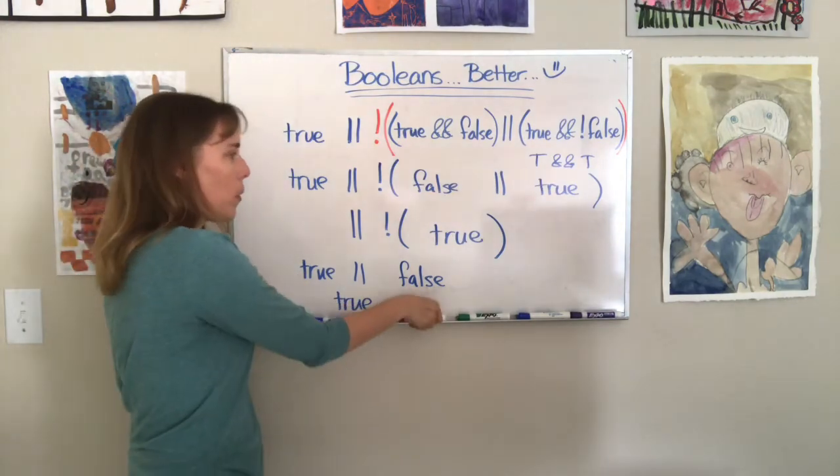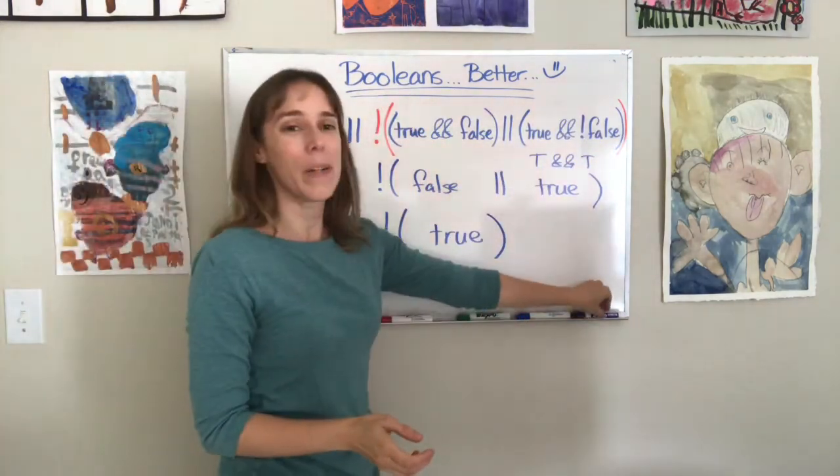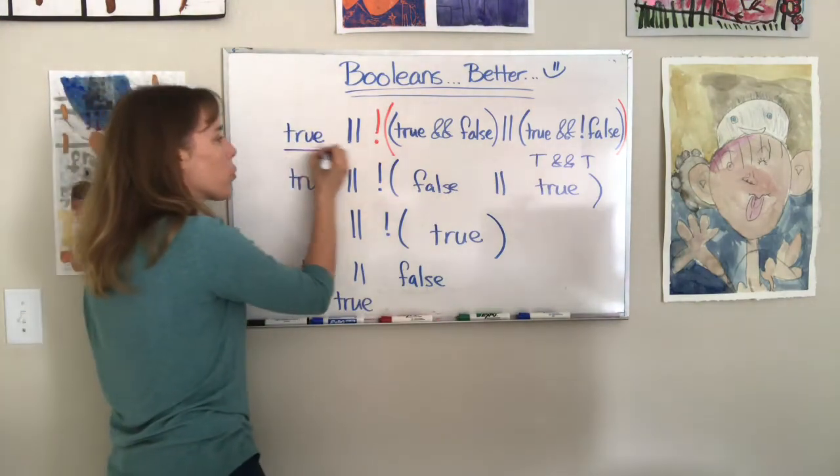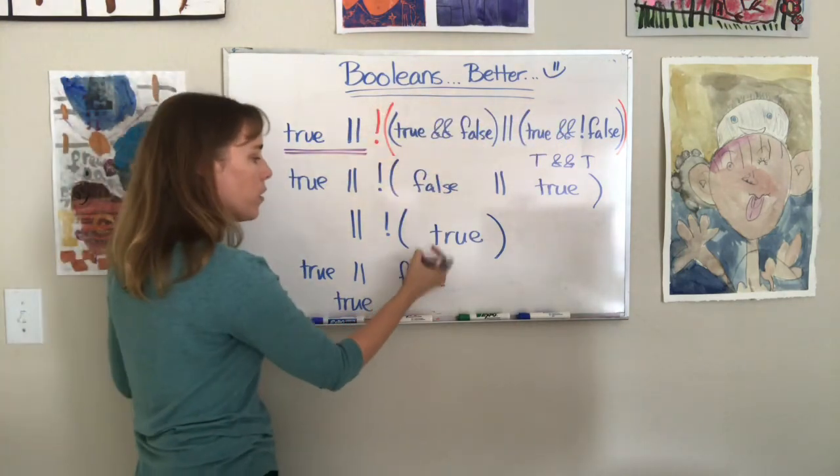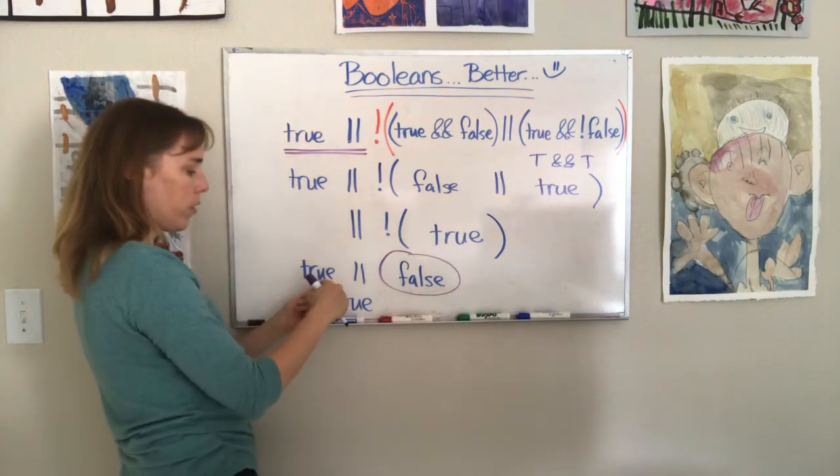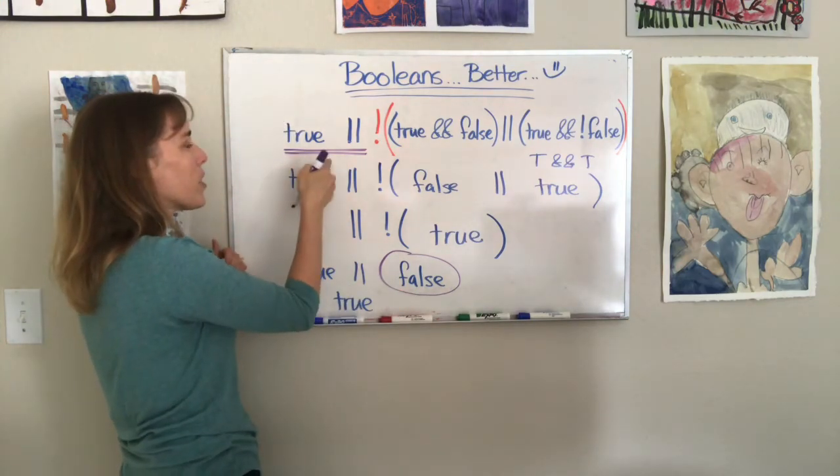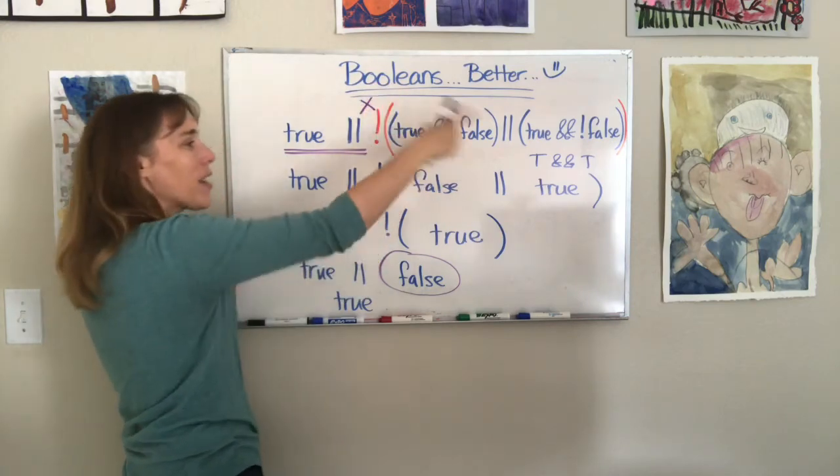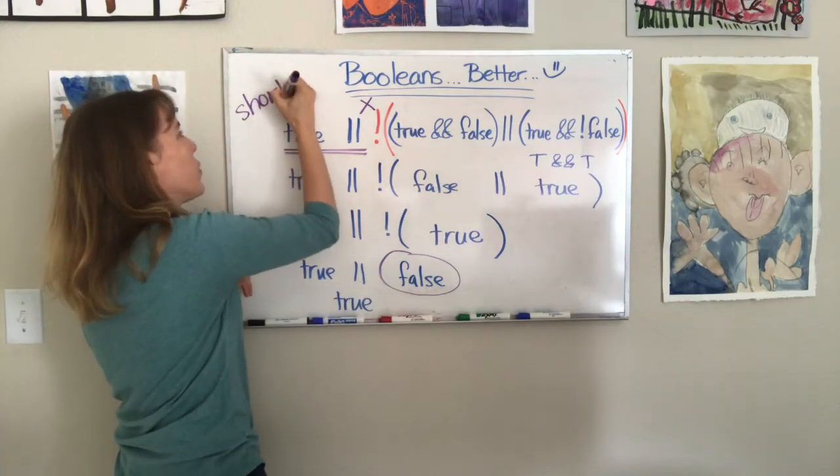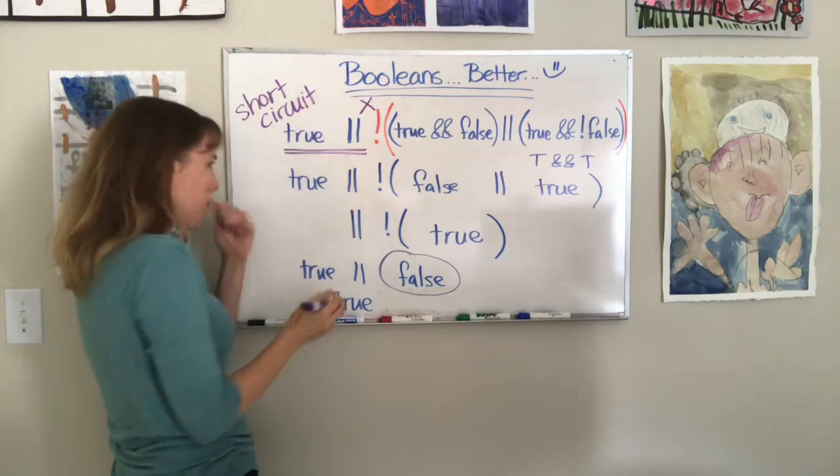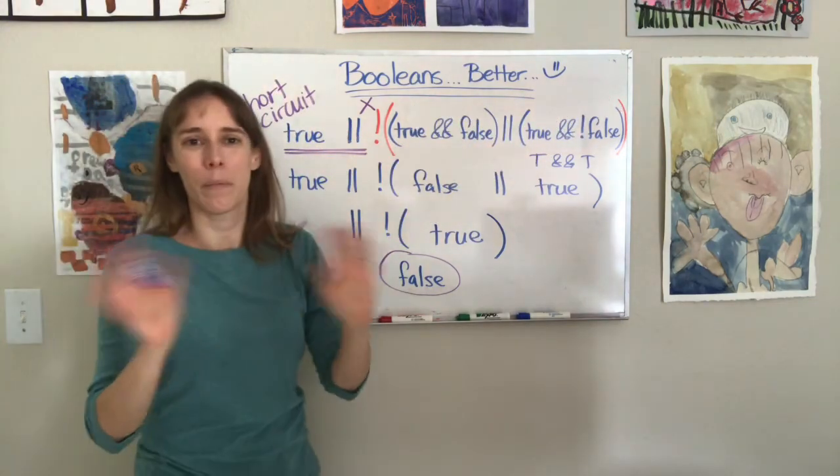Now, here's the thing. When the computer sees you type this big, long, terrible thing, it focuses on one particular part of it, which is kind of cool. True or... Regardless of what comes out of all of this mess, regardless of all of that, whether this thing is true or false, true or false is true. True or true is true. So as soon as the computer sees this, it doesn't even bother to execute all of this. It just says, oh, I know it's true. And then that's called short circuiting. So you can have that happen in your code.